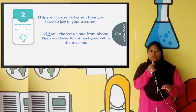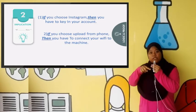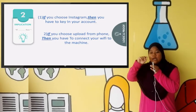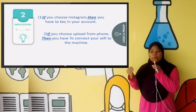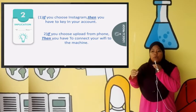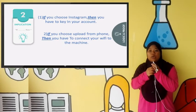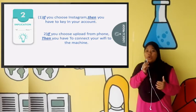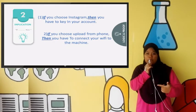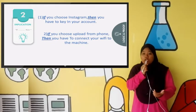For implication, in the previous flow chart as you can see, we have two selections when we want to use the machine which is first you can choose whether you want to use your Instagram or you just upload your photo from your phone.